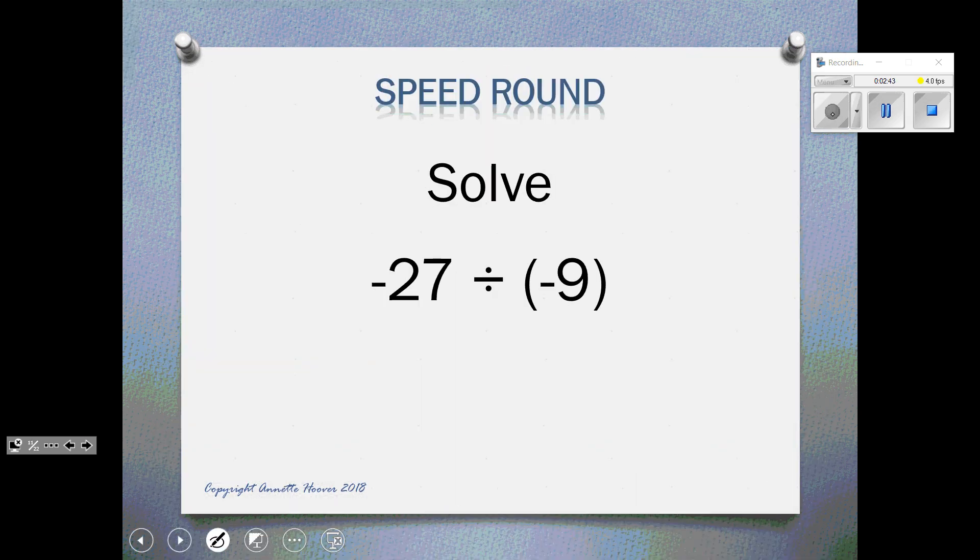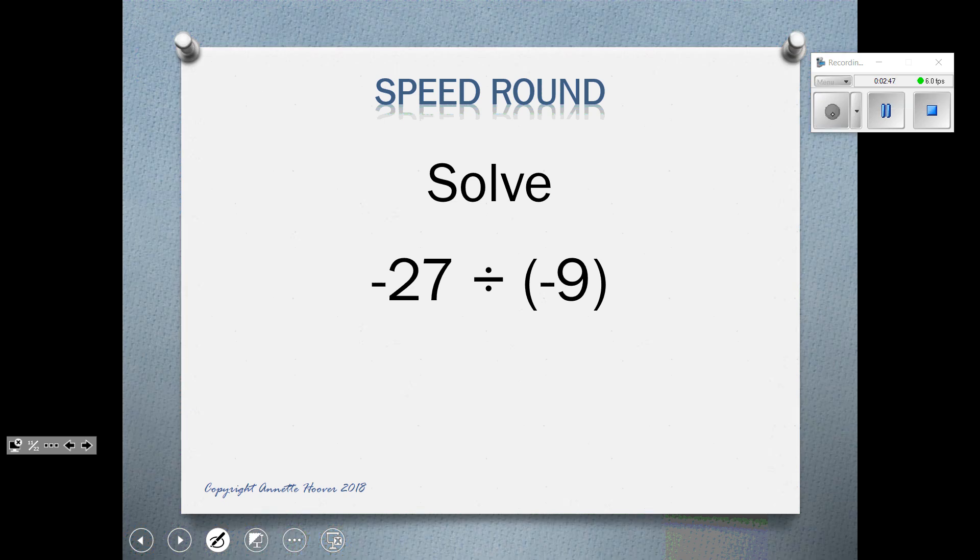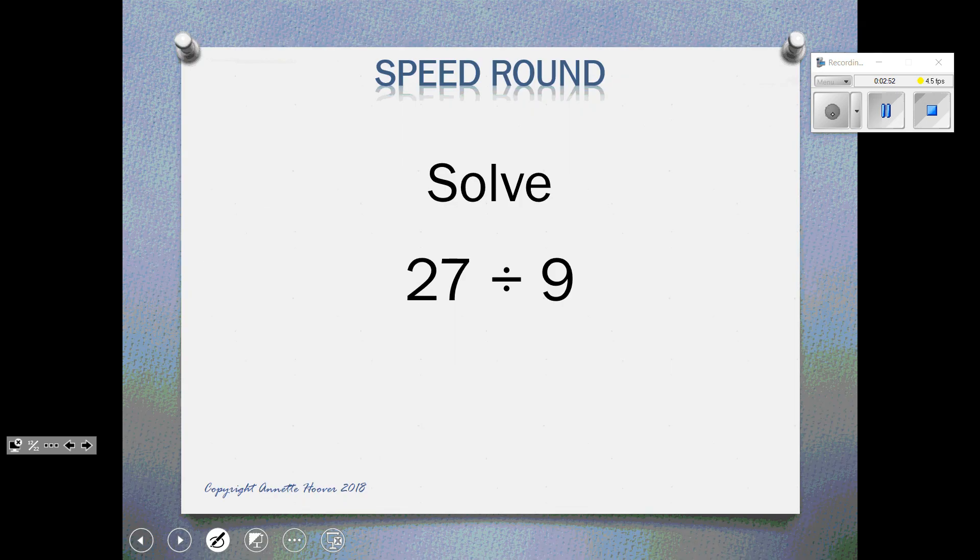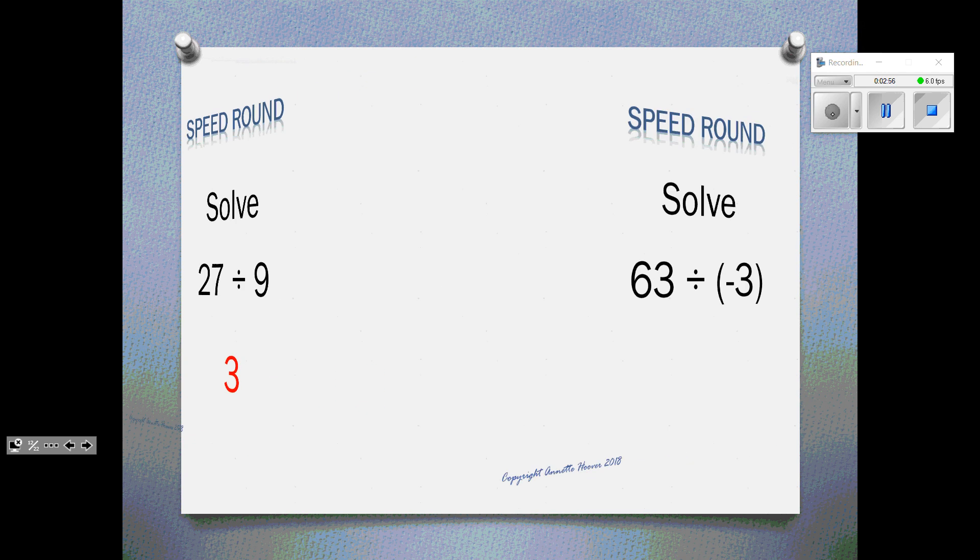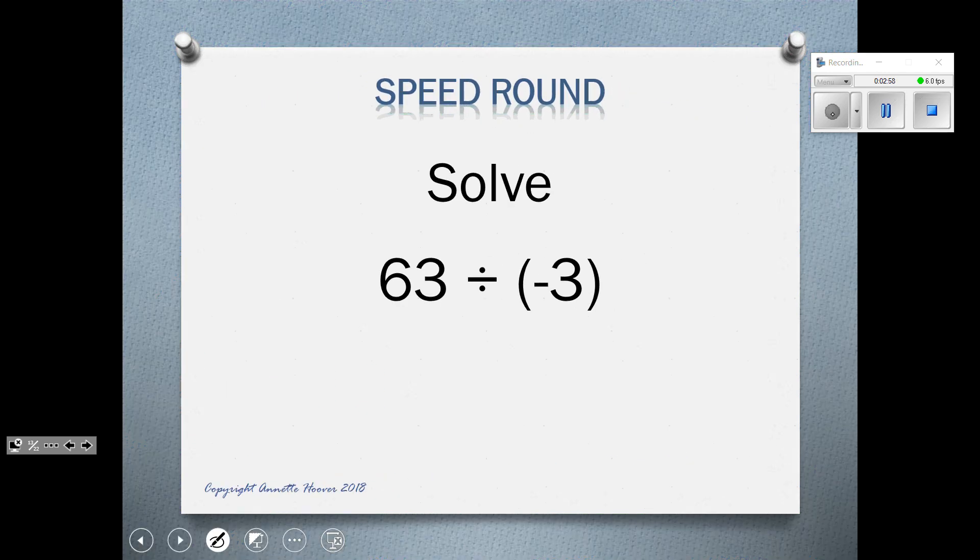Negative 27 divided by negative 9. Two negatives make a positive 3. 27 divided by 9 is also a positive 3. 63 divided by negative 3. One negative makes it negative 21.